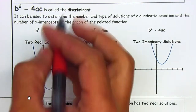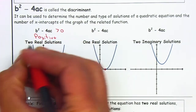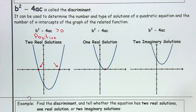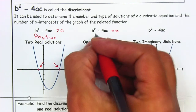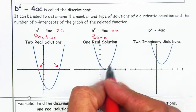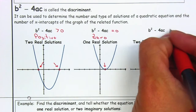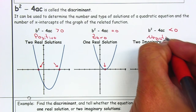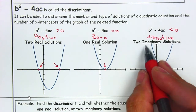If the discriminant is greater than 0, meaning it's positive, it's going to have two real solutions — it's going to cross the x-axis at two points. If it's equal to 0, that means it's going to have one real solution, crossing the x-axis at one point. And if it's less than 0 or negative, that means it's not crossing the x-axis, and the two solutions are imaginary solutions.